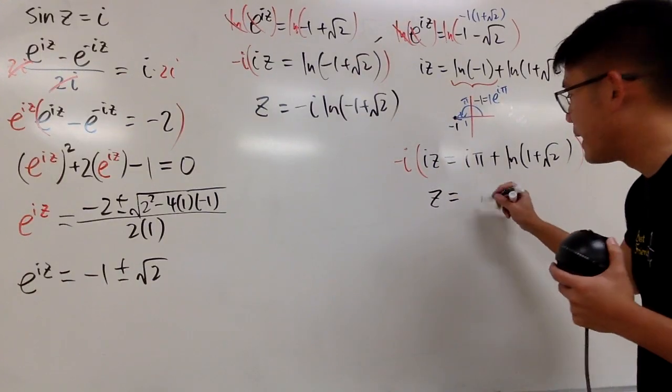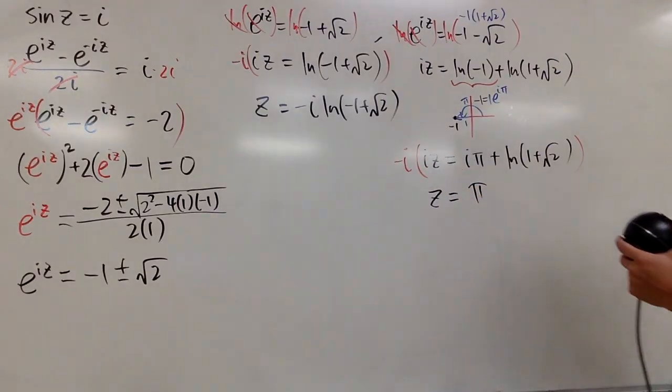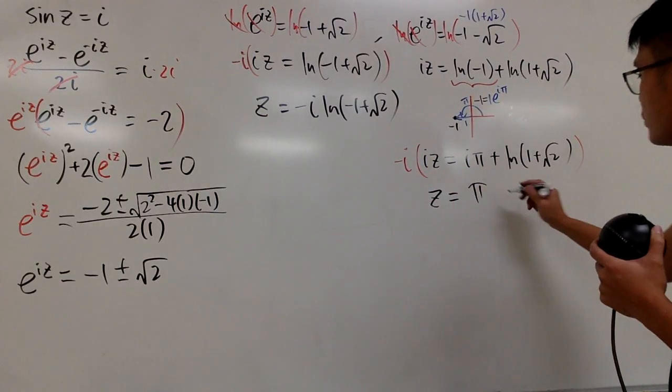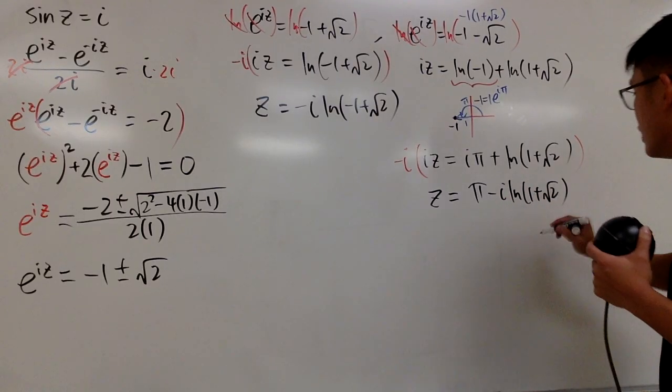This times that is going to give us positive pi, because i times i is negative 1 times negative is that. And then, of course, you just multiply this and that, which is negative i ln of 1 plus square root of 2, like this.